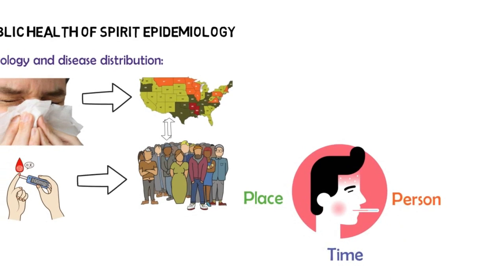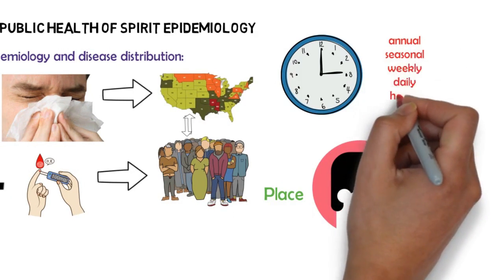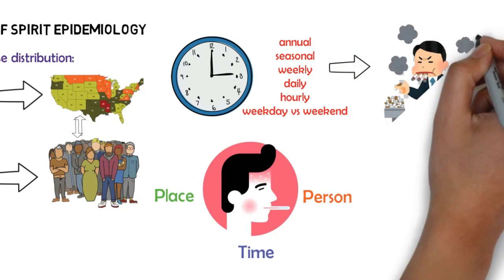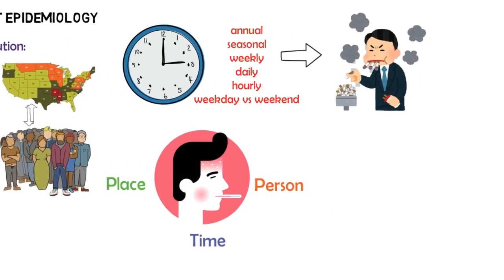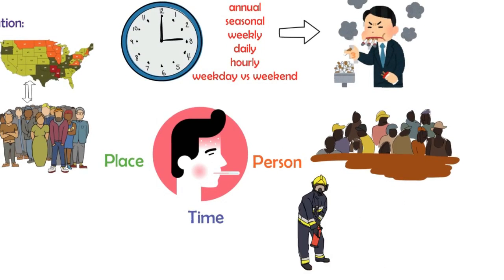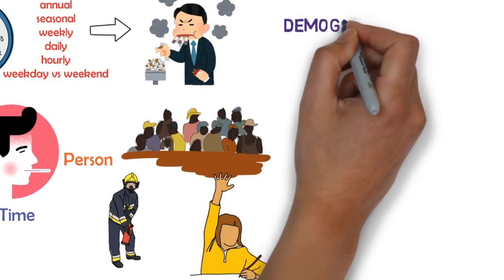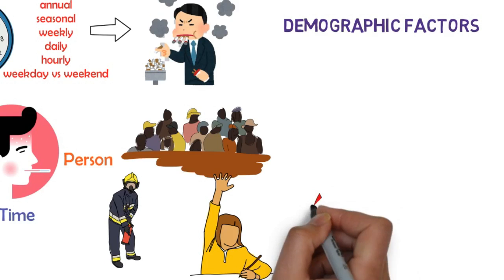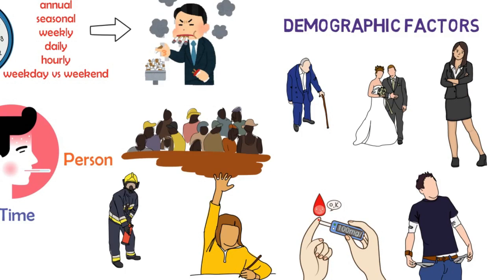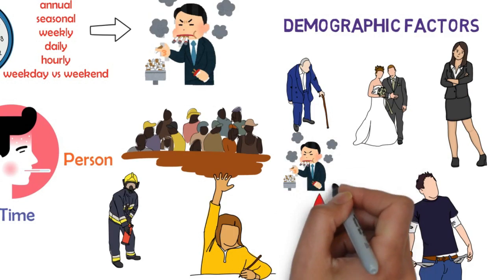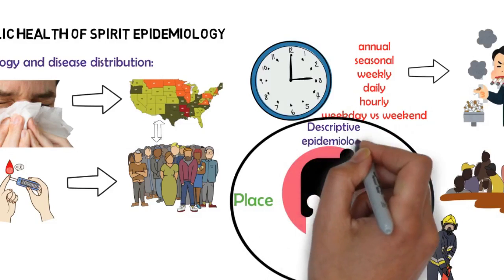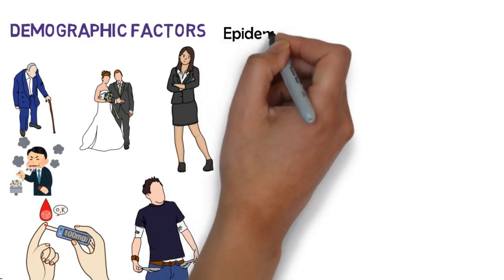Pattern refers to the occurrence of health-related events by time, place, and person. Time patterns may be annual, seasonal, weekly, daily, hourly, weekdays versus weekends, or any other breakdown of time that may influence disease or injury occurrence. Place patterns include geographic variation, urban or rural differences, and location of work sites or schools. Personal characteristics include demographic factors — such as age, gender, marital status, and socioeconomic status — as well as behaviors and environmental exposures. Characterizing health events by time, place, and person are activities of descriptive epidemiology, discussed in more detail later in this video.